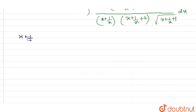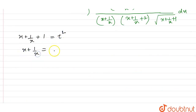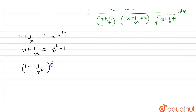So let x plus 1 by x plus 1 equal t squared. From here, x plus 1 by x will be equal to t squared minus 1. And we have 1 minus 1 by x squared dx equal to 2t dt.